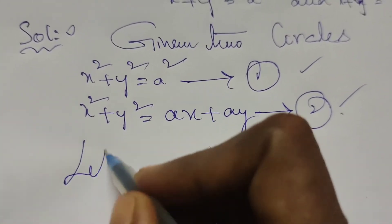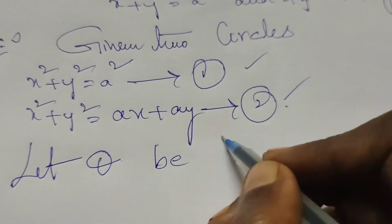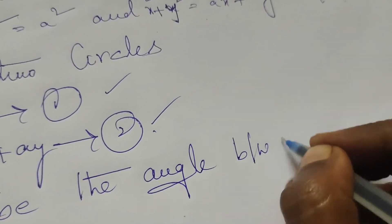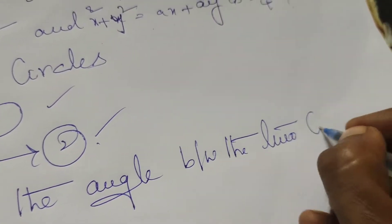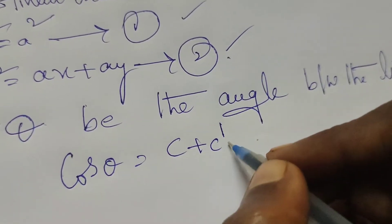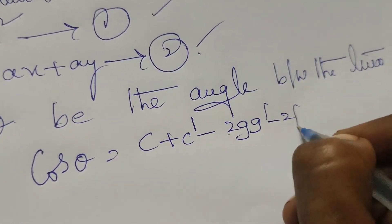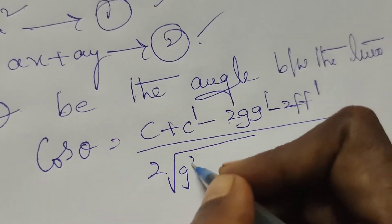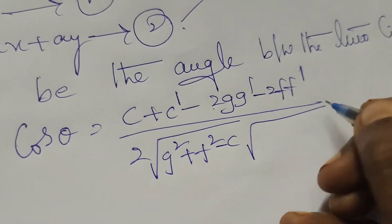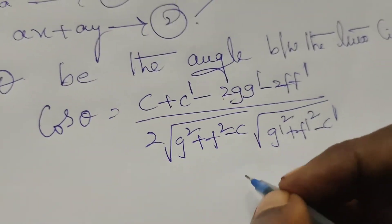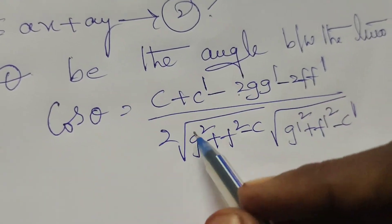Now, suppose θ be the angle between the two circles. Then the formula: cos θ = (c + c' − 2gg' − 2ff') divided by 2 × √(g² + f² − c) × √(g'² + f'² − c'). This is the angle between the two circles formula.